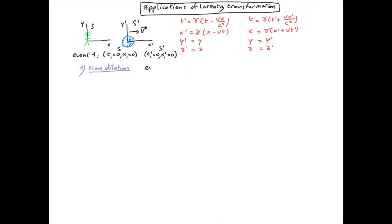We now need to define our second event. The clock is not moving in S′, therefore it's still at X₂′ = 0 in the second event, and the time has advanced by the proper time T₂′ = τₚ. What we want is the time in the S coordinate.